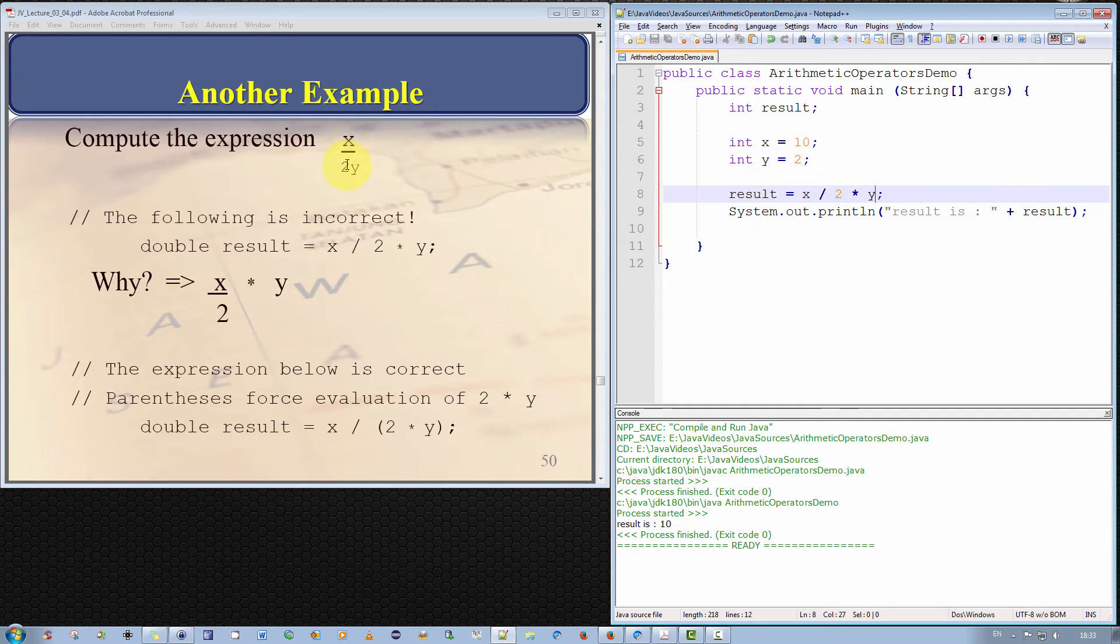x is 10, 2y is 4, y is 2, 2 by 2 is 4, 10 divided by 4 is not 10. So to ensure we get the right answer we must use parenthesis to ensure that this multiplication is performed before this division operation.